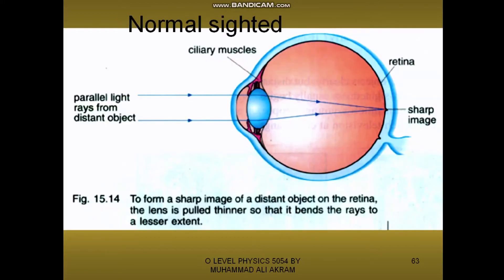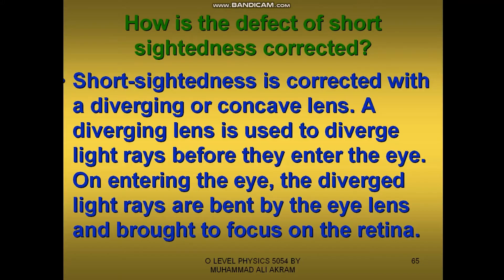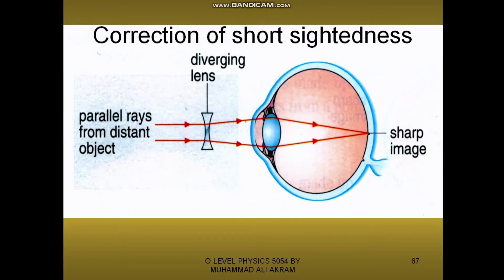The diagram for a normal sighted person is shown in figure 15.14, and the diagram for a short sighted person shows that the image is formed in front of the retina. The defect of short sightedness can be corrected by wearing glasses with concave lenses. A short sighted person trying to look at the sun or moon can wear glasses with diverging lenses and the problem is solved.